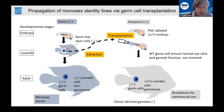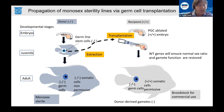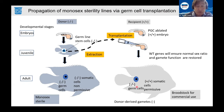Germ cells can be extracted from a mutant juvenile fish and transplanted into a wild-type recipient embryo that has been previously depleted of its own germ cells. The donor germ cells colonize the gonad of the recipient embryo to create a chimera. In this chimera, the mutations are silenced, and the recipient fish develop as normal males and females that only produce donor-derived sperm and eggs. Since those germ cells carry mutations, this creates our commercial broodstock that only produces sterile monosex populations of progeny.